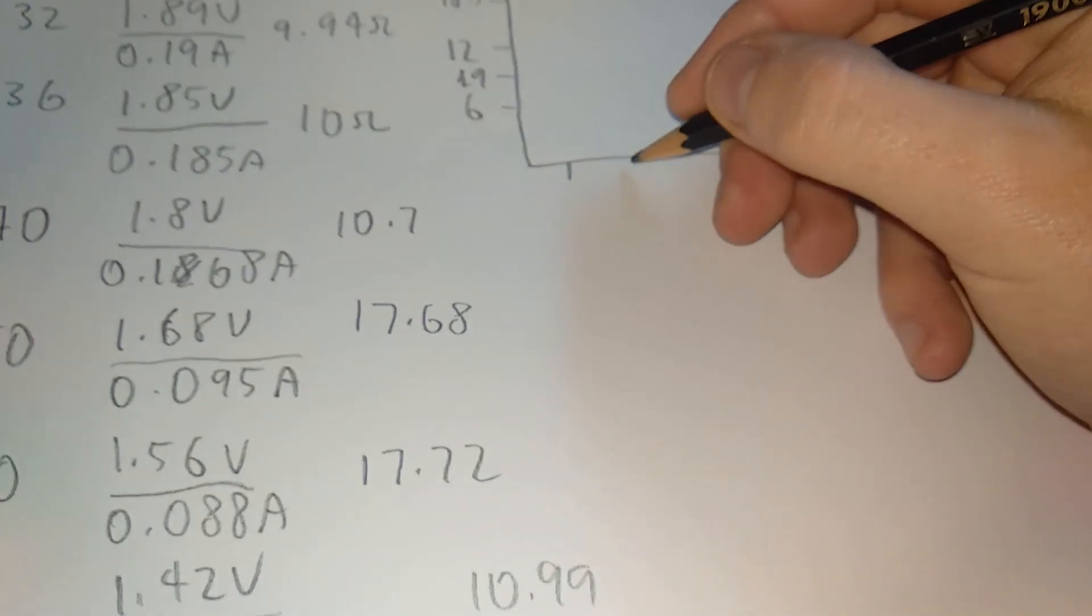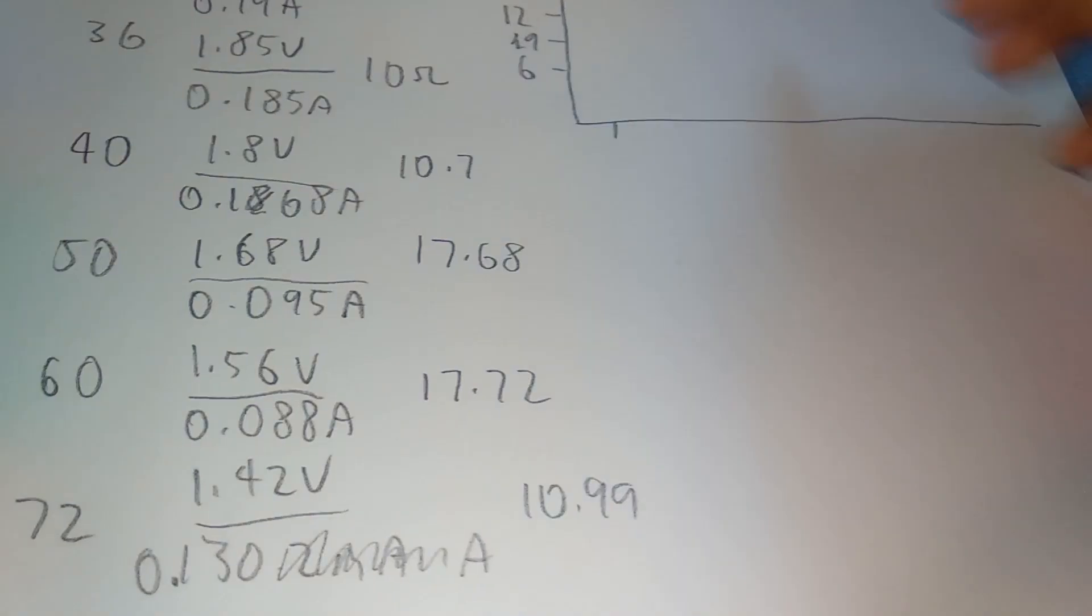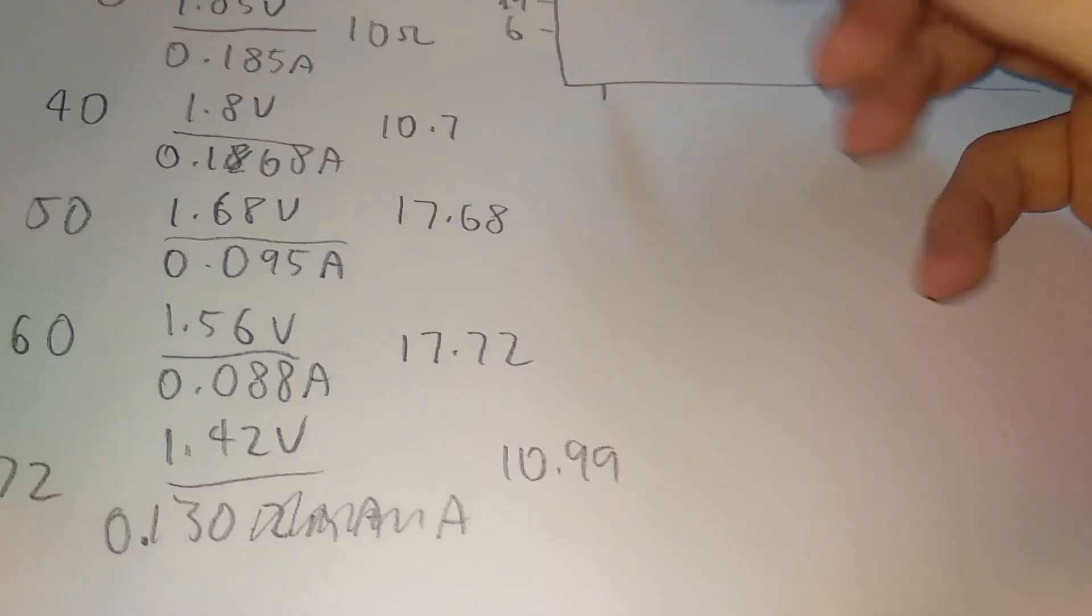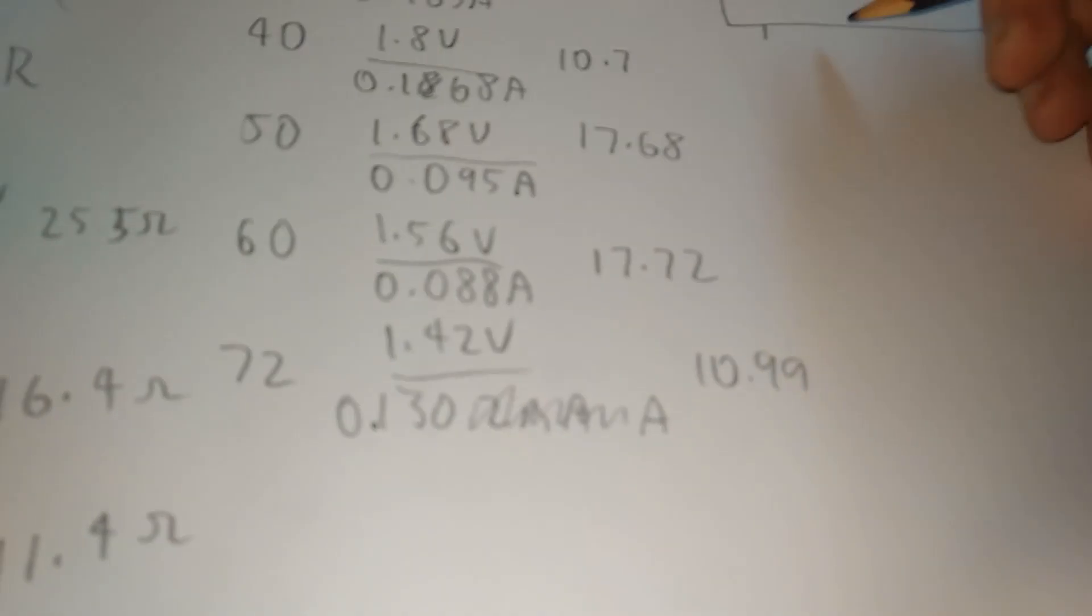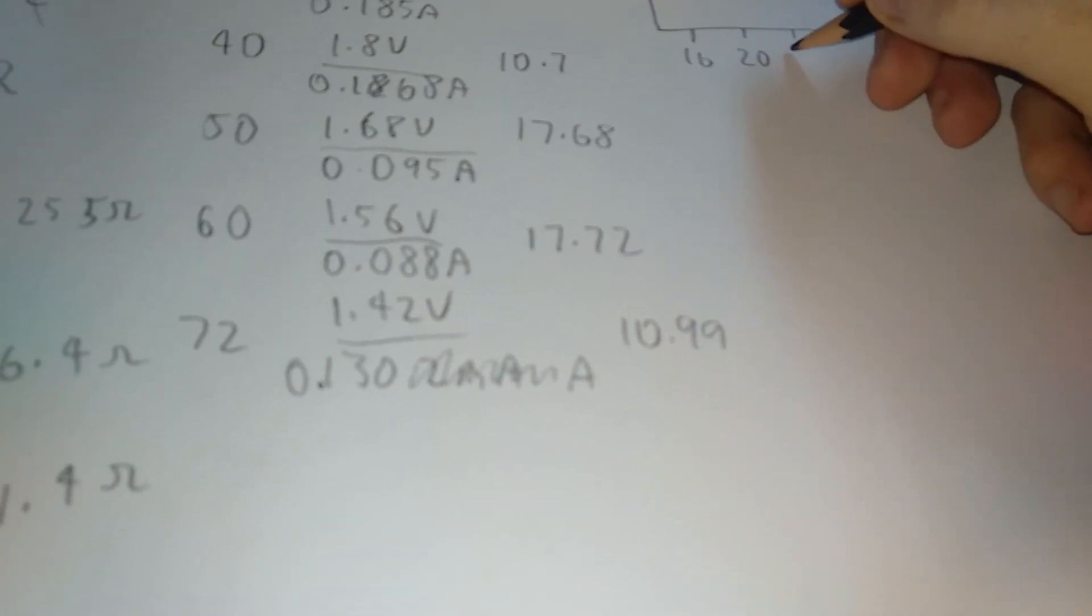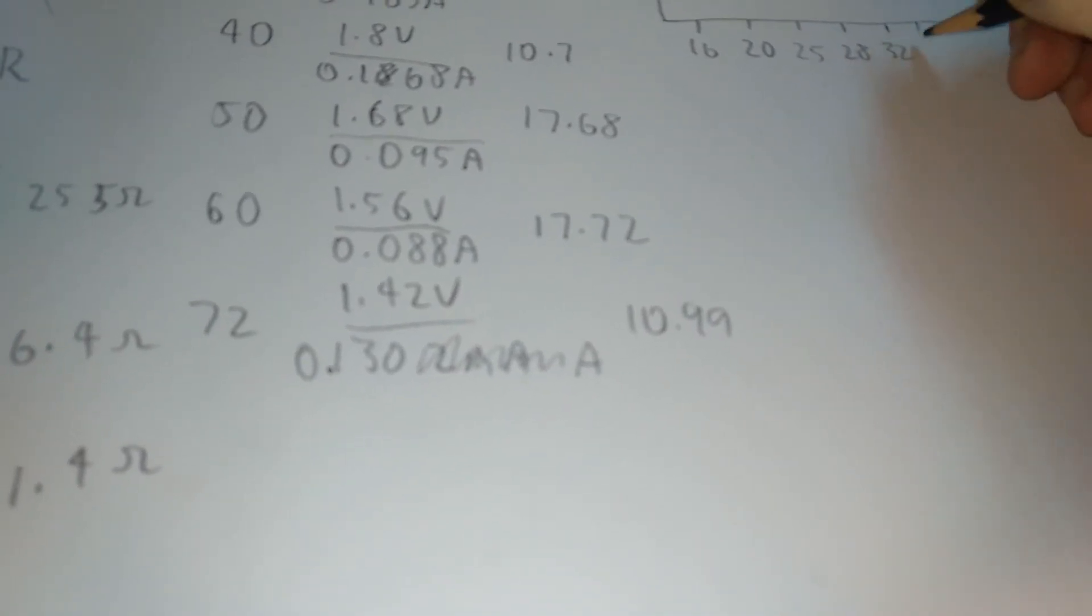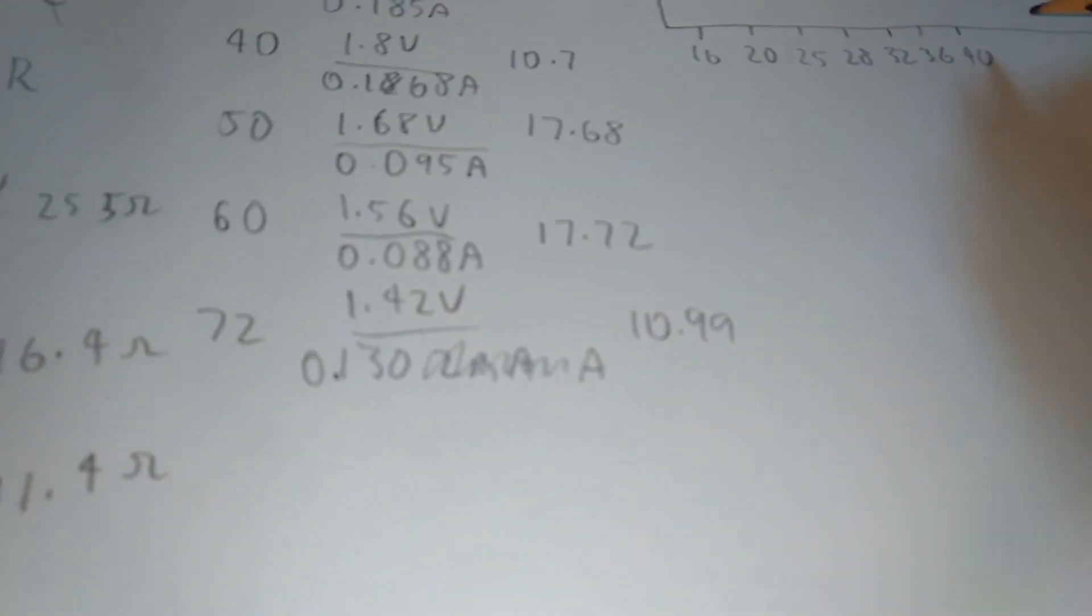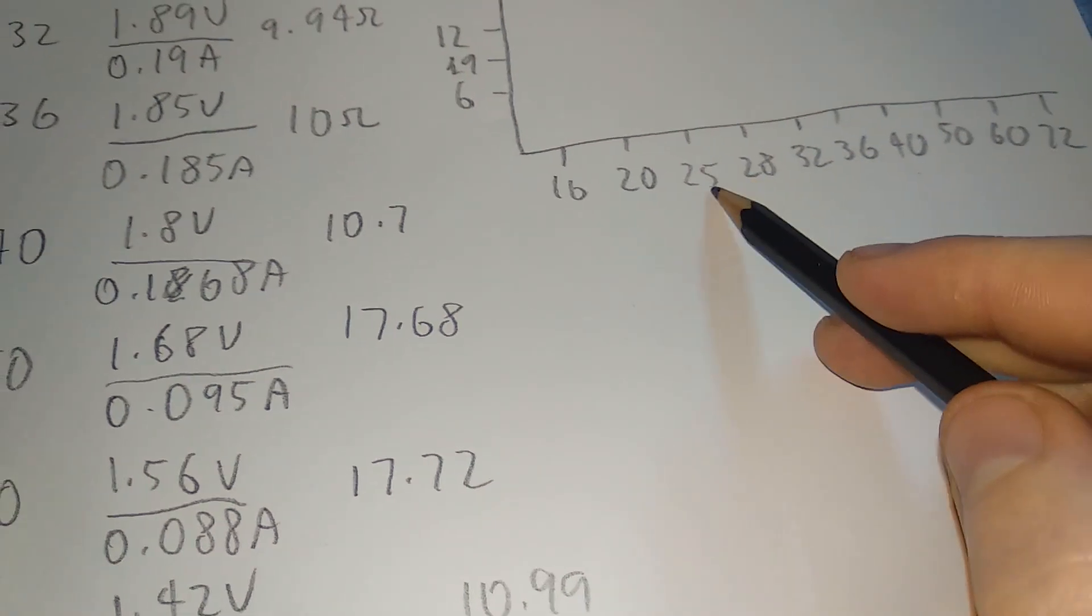Super rough graph, it doesn't need to be too accurate, you just kind of need to look at it, get the average gist of what's going on. You could take it off this here but it's kind of easier to understand if you draw it. 16, 20, 25, 28, 32, 36, 40, 50, 60, 70. I know it's not sort of linear or anything, if anything I should have had a big gap between 25 and 28 something like that.